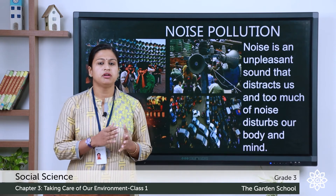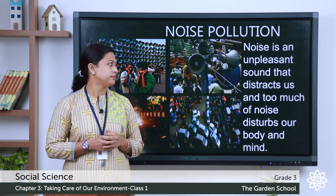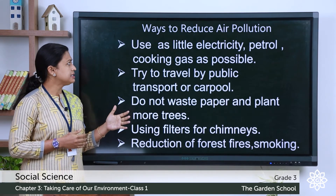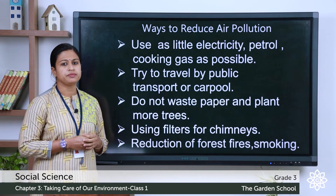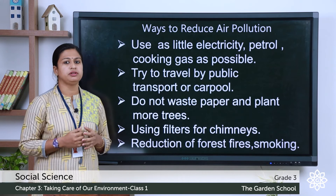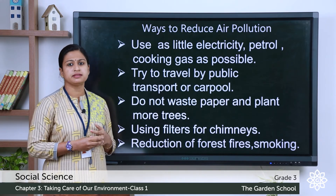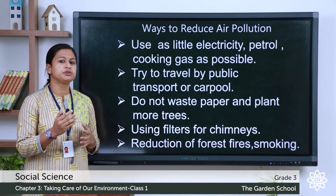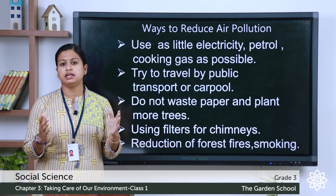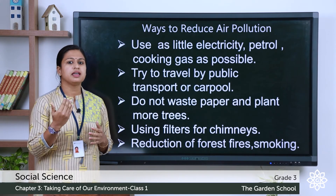We should be aware of the harmful effects of pollution and we must study the steps to reduce it. Now let's discuss them one by one. First, steps to reduce air pollution: use as little electricity, petrol, and cooking gas as possible. You can use alternative sources of energy like solar panels. Turn off lights and appliances when not in use. Travel by public transport, make less use of private cars and motorbikes — even using a carpool system is a good idea. Do not waste paper, and plant more and more trees. Trees keep the atmosphere clean and healthy, absorbing harmful carbon dioxide and releasing oxygen.